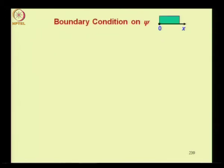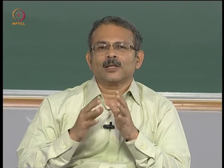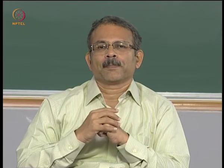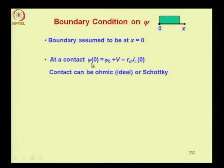Finally, we discuss boundary conditions. We need a minimum of three boundary conditions — one on psi, one on n, and one on p — to solve the three coupled equations. For a contact at x equals zero, the potential is the sum of the built-in potential plus the applied voltage at that contact minus the contact resistance times the normal current density. This formula applies for both ohmic and Schottky contacts.